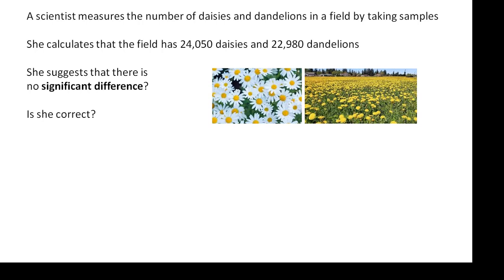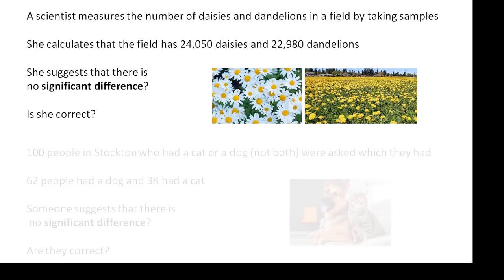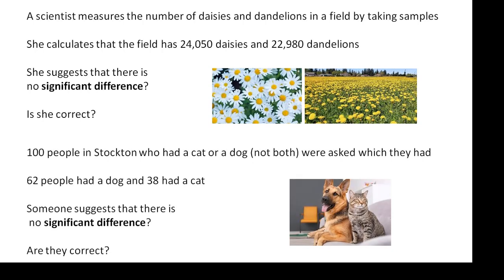Can we test her suggestion? A hundred people in Stockton who had a cat or a dog, but not both, were asked which one they had. And 62 people had a dog and 38 had a cat, and someone suggests that there is no significant difference — a null hypothesis. Looking at these two examples, you'd probably say that with the flowers there is no significant difference, but with the cats and dogs you would probably say there is a significant difference, that people were more likely to have a dog. What we need is a mathematical, empirical way of testing whether there is no significant difference.